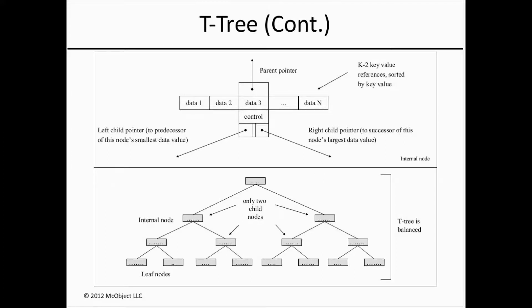Looking at how the T-tree is organized: in the top picture, a T-tree node consists of pointers to the parent node, the left and right child nodes, an ordered array of data pointers, and some extra control data. In the bottom picture, nodes with two sub-trees are called internal nodes, nodes without sub-trees are called leaf nodes, and nodes with only one sub-tree are named half-leaf nodes. For each internal node or half-leaf node, pointers exist that contain the predecessor of its smallest value and the successor of its largest data value. Leaf and half-leaf nodes can contain any number of data elements from one to the maximum size of the data array.